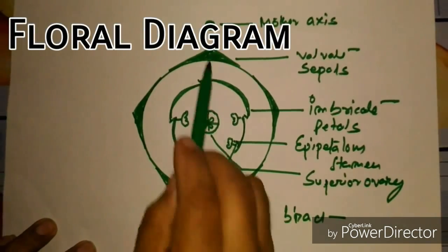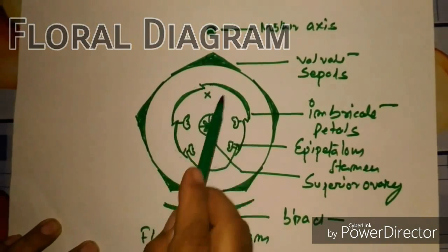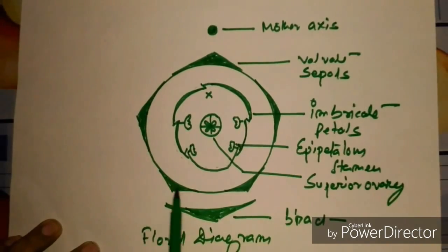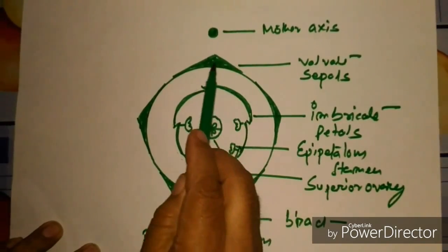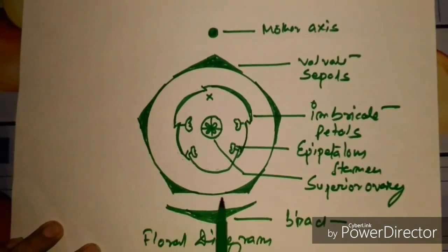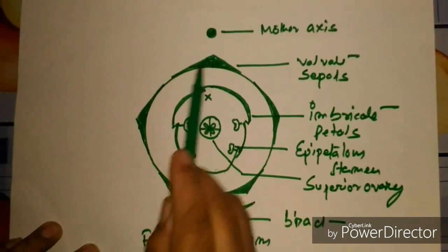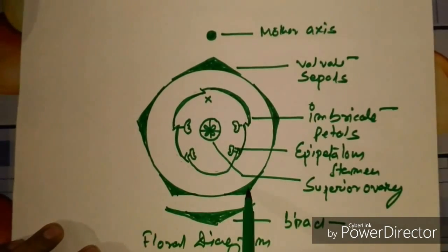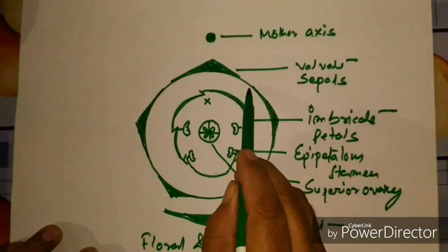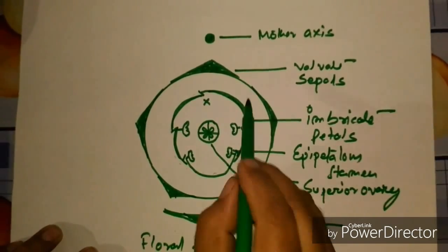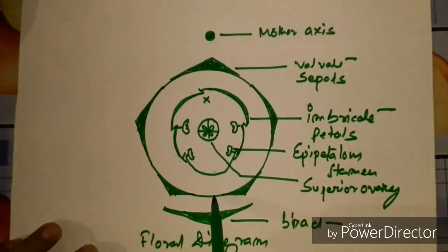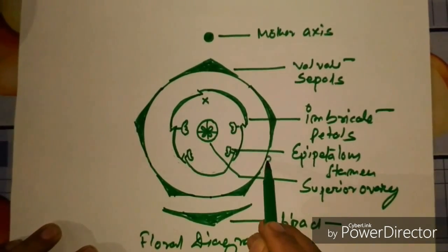This is the floral diagram. This one is mother axis, this one is the aestivation of the sepals. One, two, three, four, five. Five sepals. Since they are united to each other to form the tube, so here it is locked.